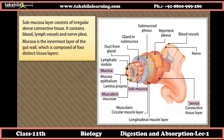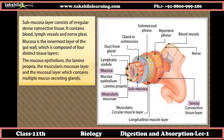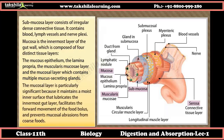The mucosa is the innermost layer of the gut wall, composed of four distinct tissue layers: the mucus epithelium, the lamina propria, the muscularis mucosae, and the mucosal layer containing multiple mucus-secreting glands. The mucosal layer is significant because it maintains a moist inner surface that lubricates the gut, facilitates the forward movement of the food bolus, and prevents mucosal abrasions from coarse foods.